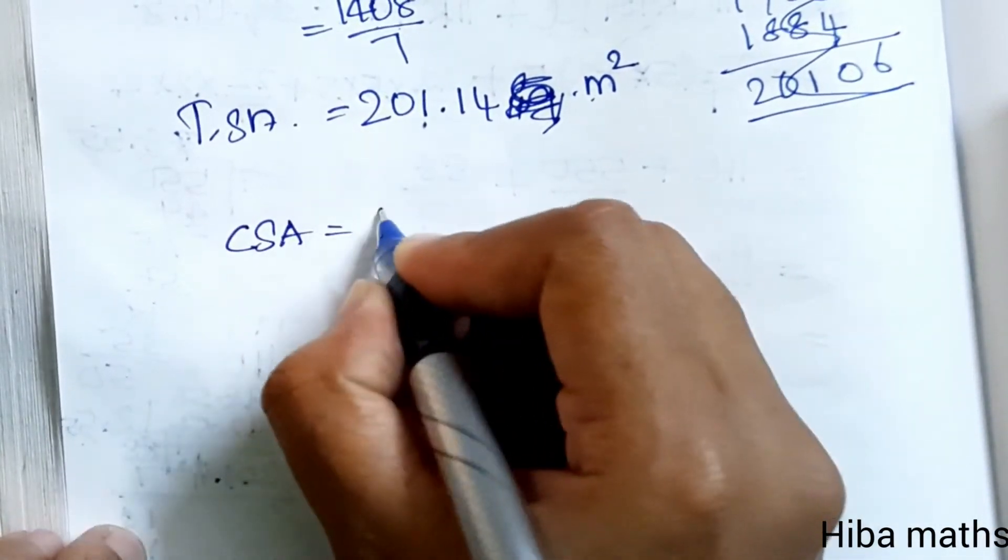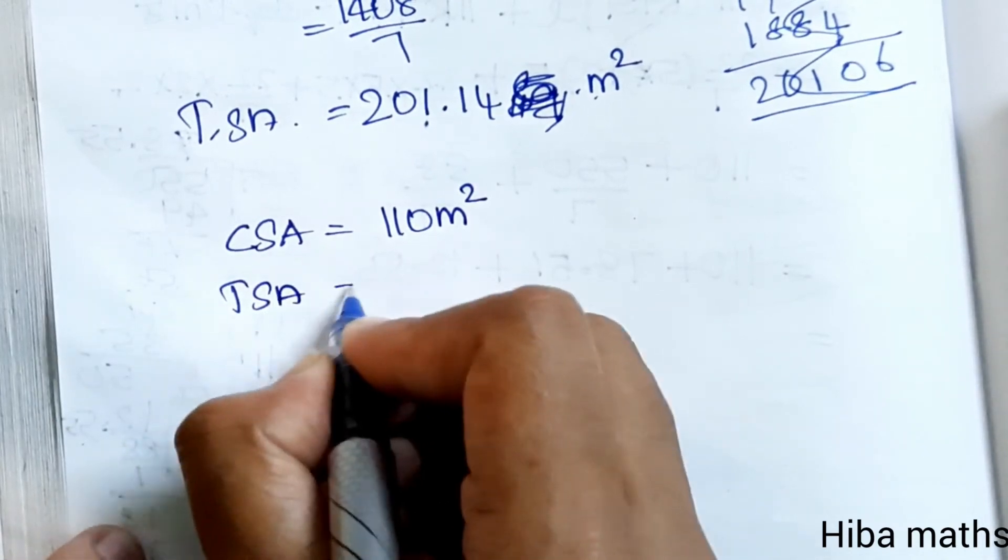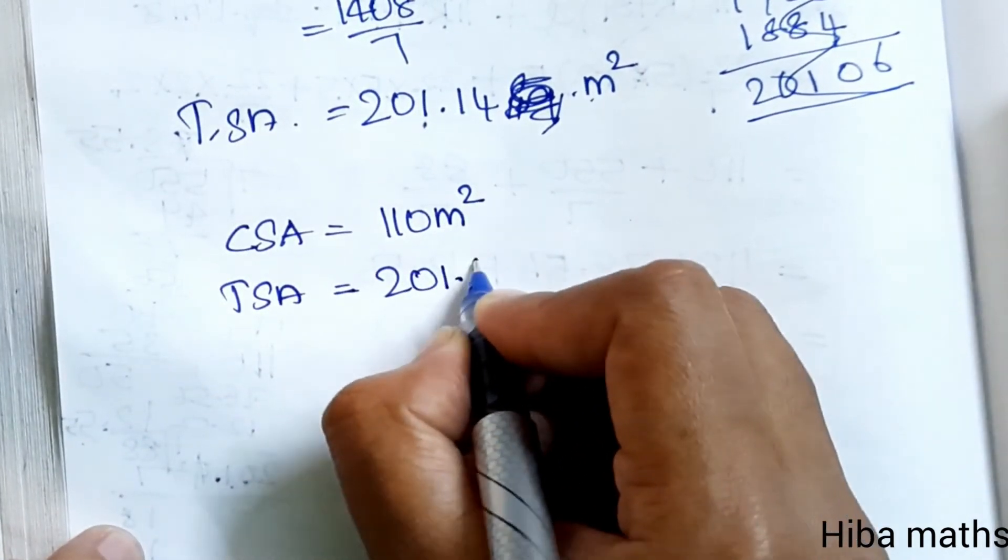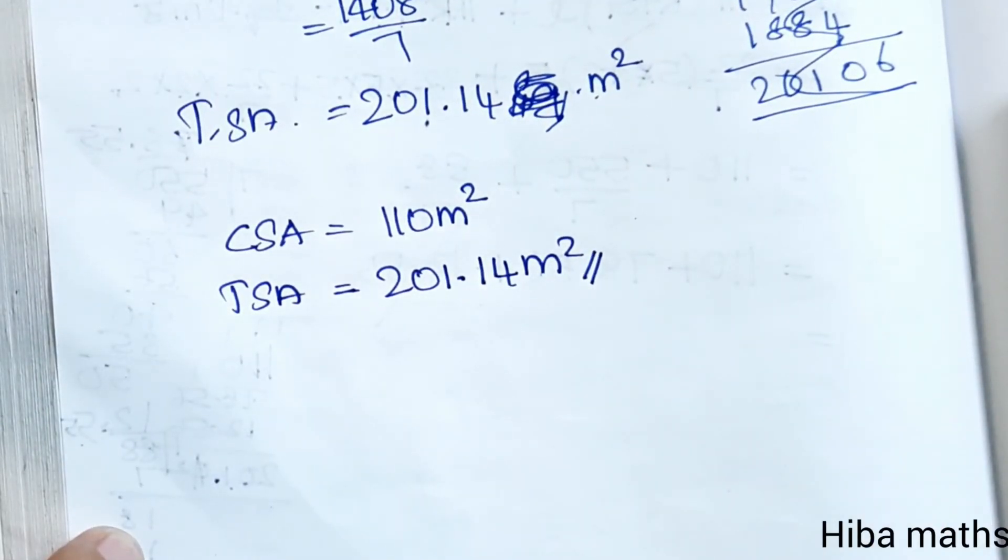Here the solution gives us two values: first, CSA is 110 meter square; second, TSA is 201.14 meter square. Thank you so much for watching.